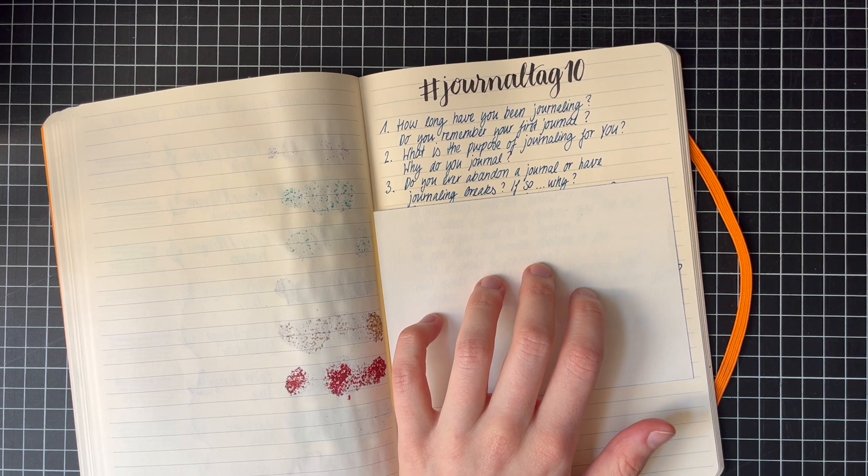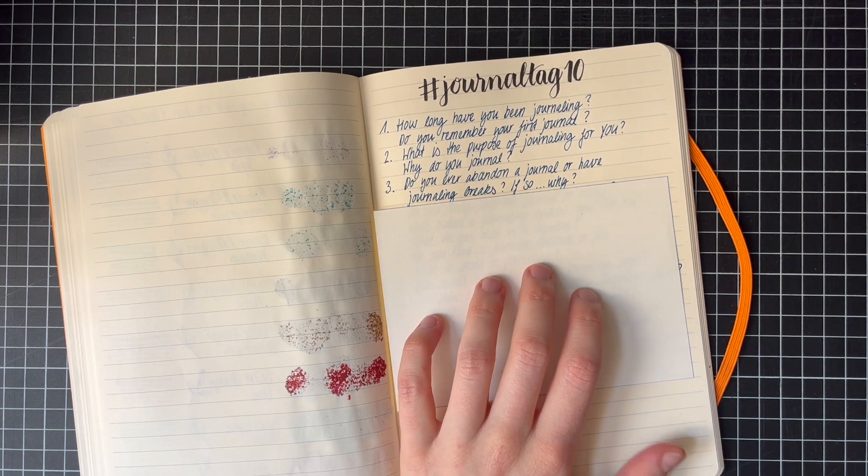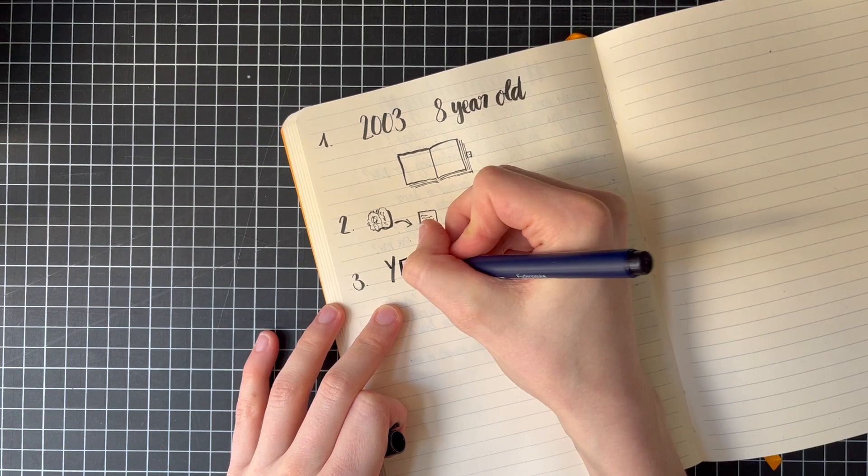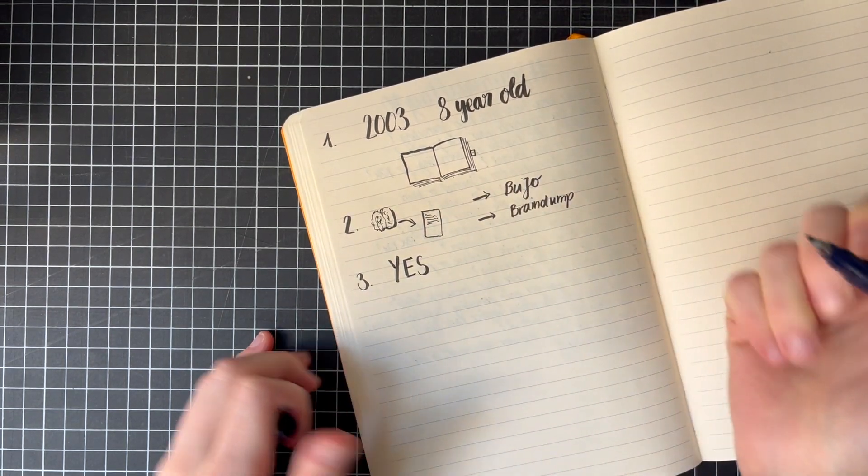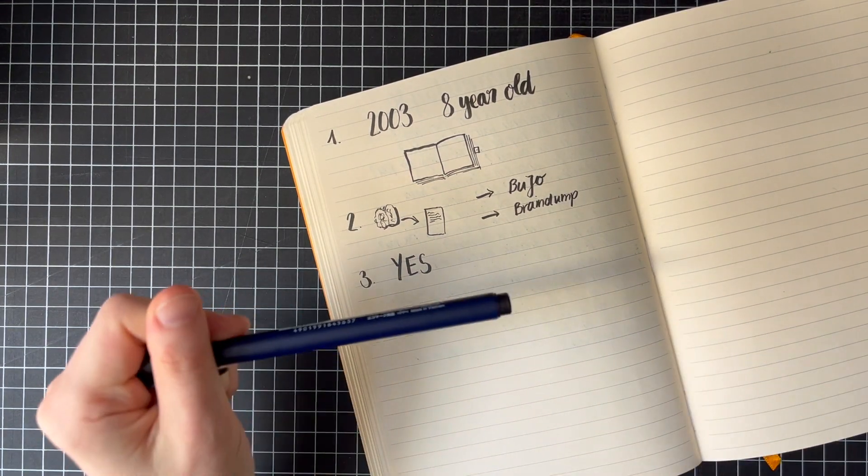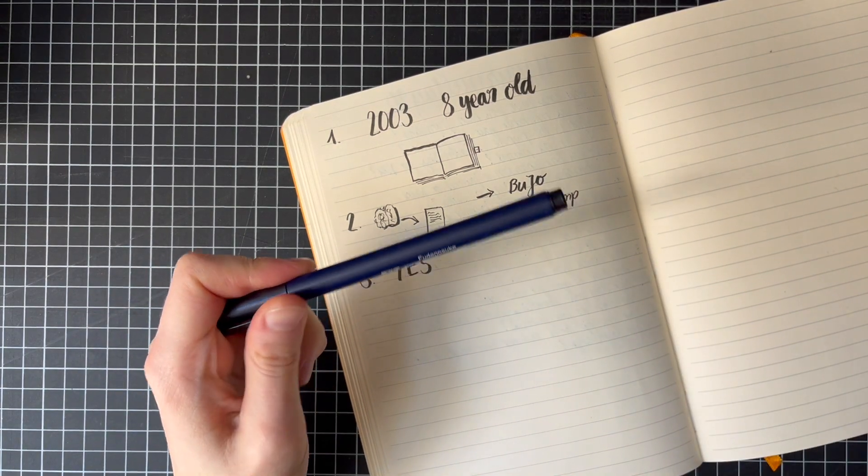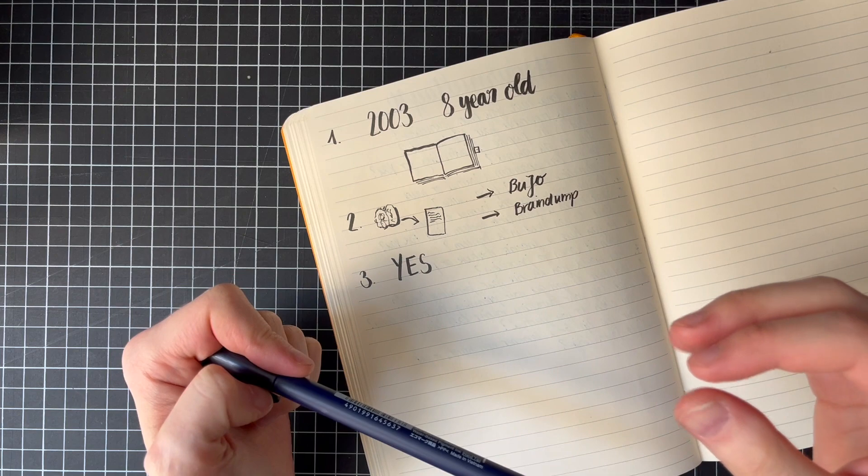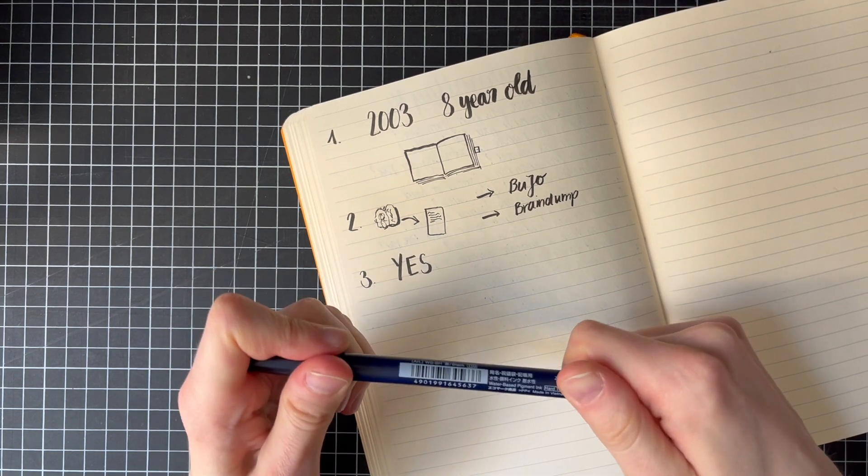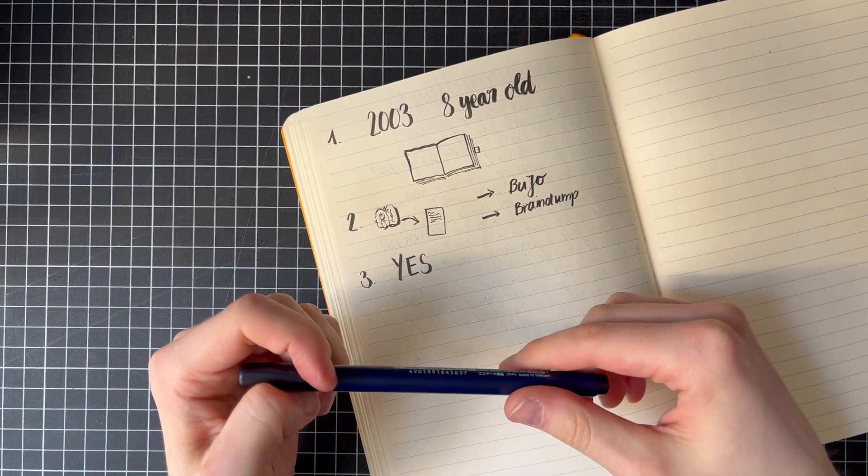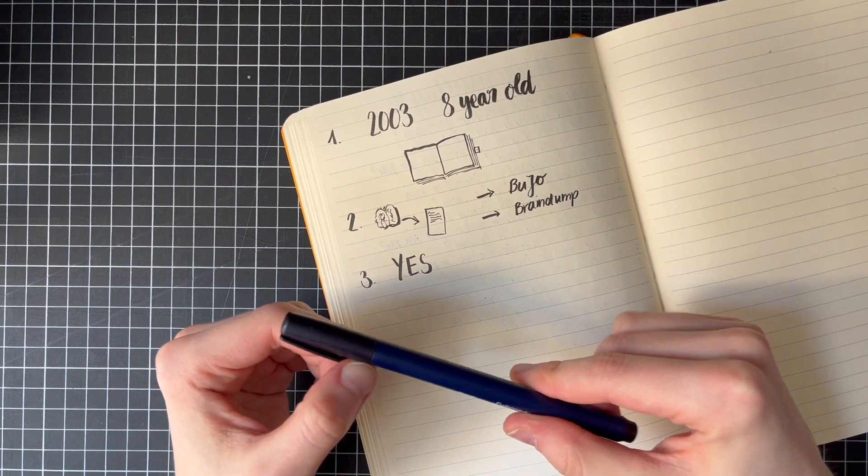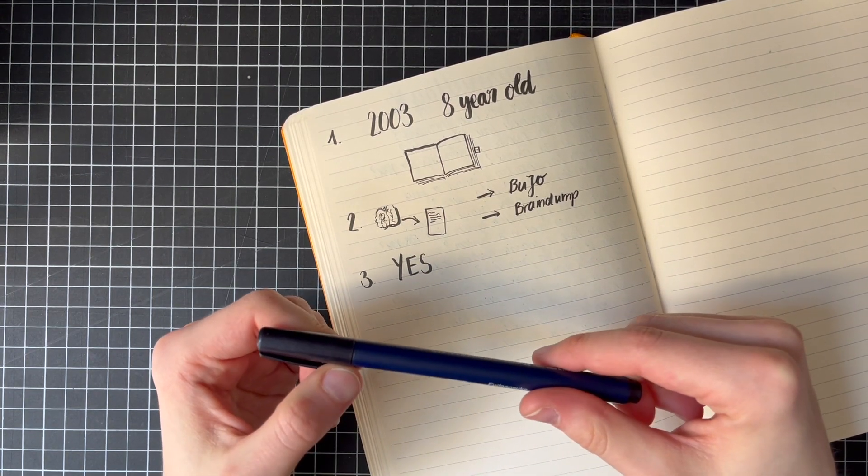Do you ever abandon a journal or have your journaling breaks? If so, why? Yes, definitely. I have abandoned some journals. Mainly, because so many heavy thoughts, so many brain dump happened in there. And there was some heavy times, so that I actually didn't want to pick the journal up again. So I have some journals abandoned. Also, now archived, because I'm considering them done. I think I love to finish a journal. But if it's not helping me, why should I keep on?